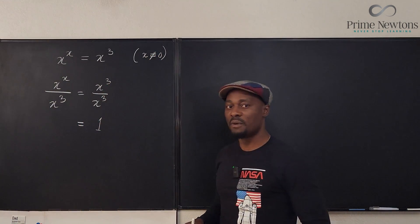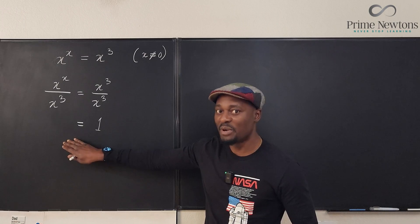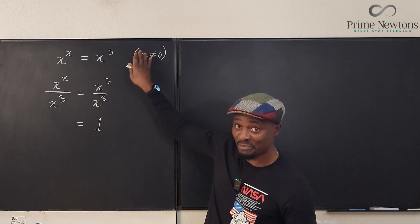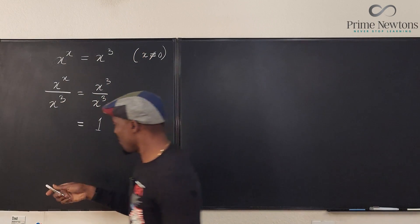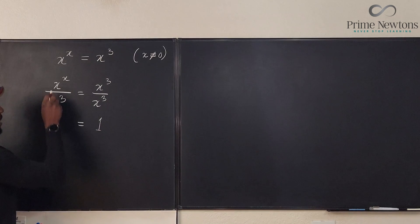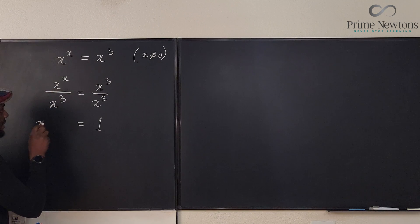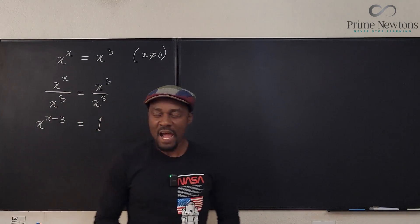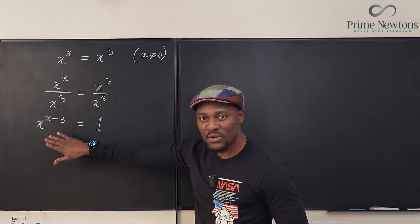So it makes this division possible. I didn't have to divide but I choose to do division just to make that point. So on this side what do I have? I'm going to have by the laws of exponents, x to the x minus three.